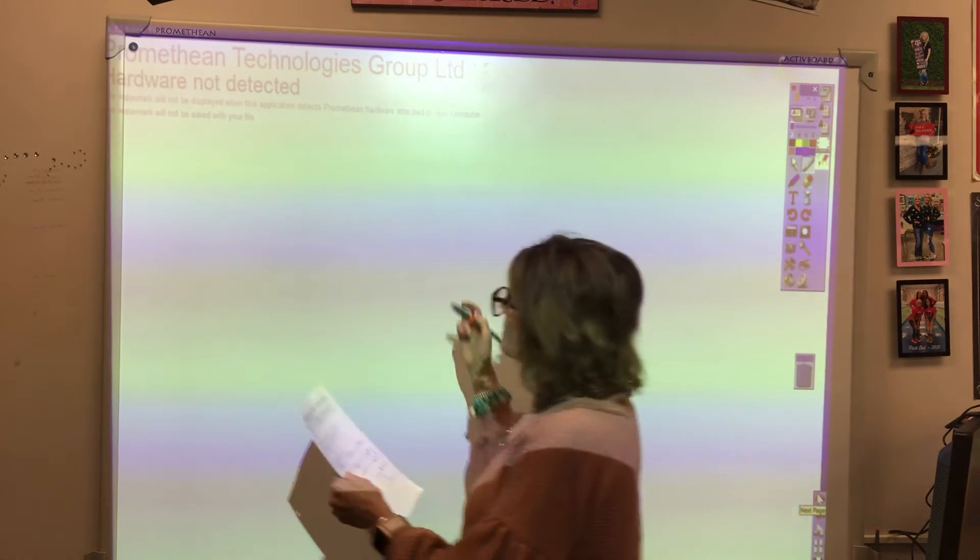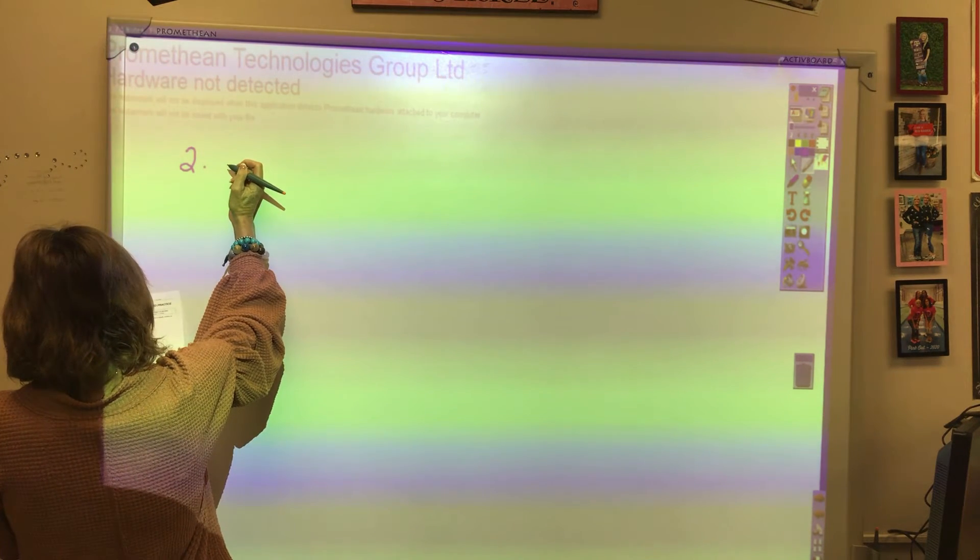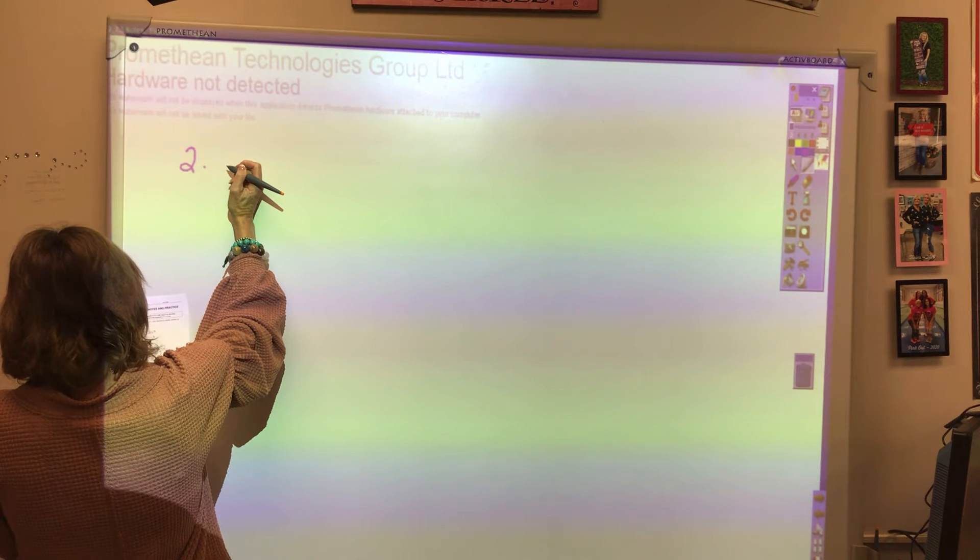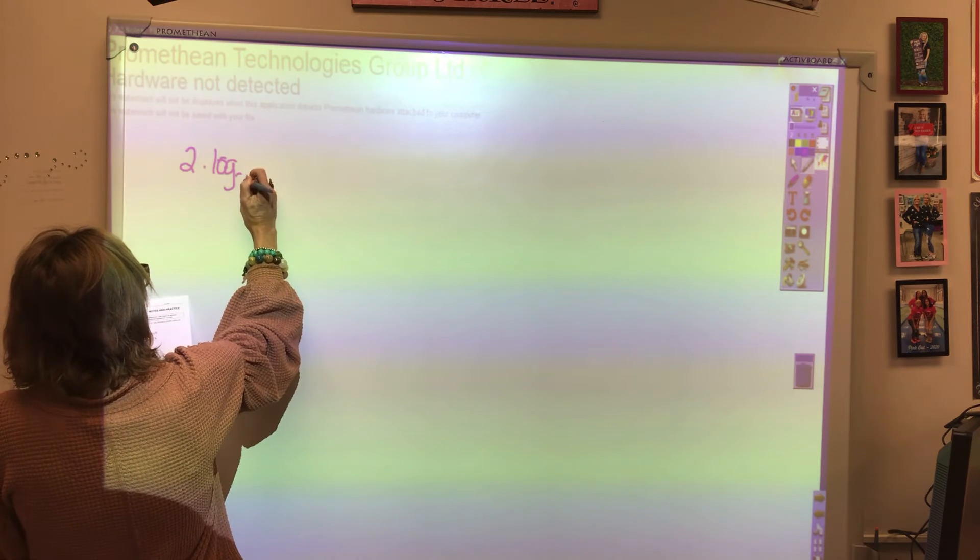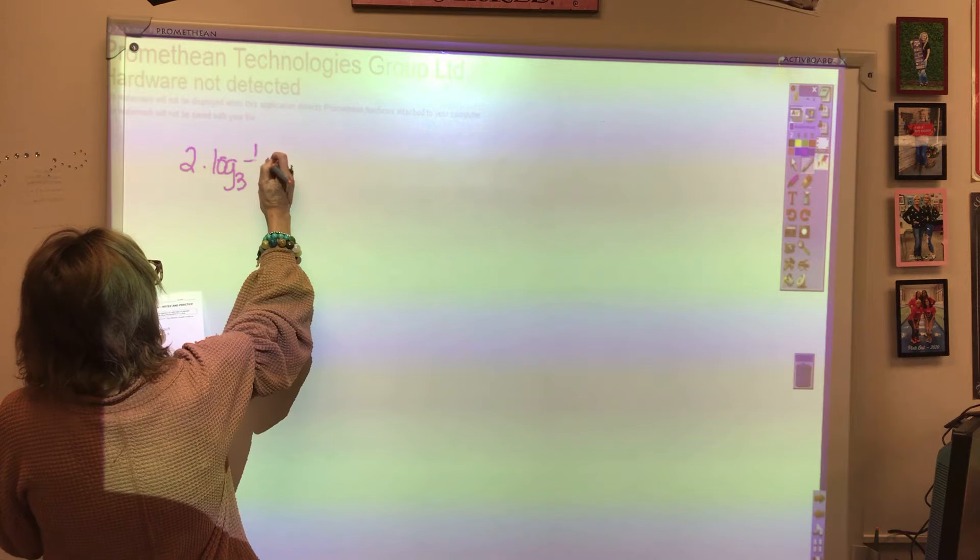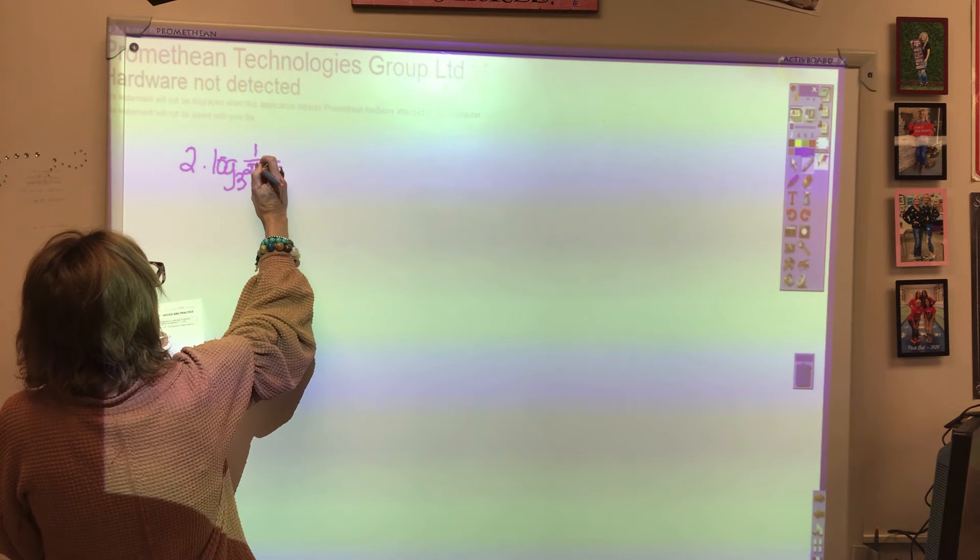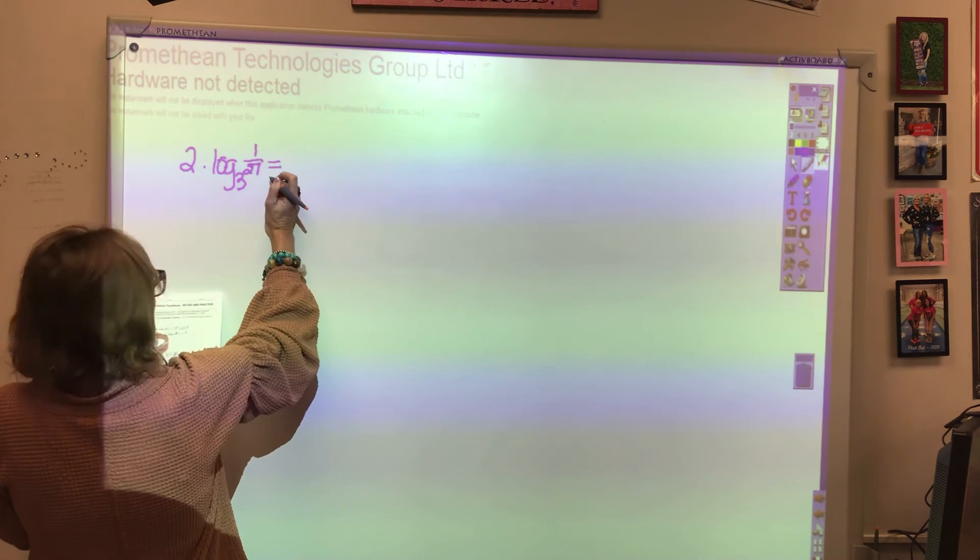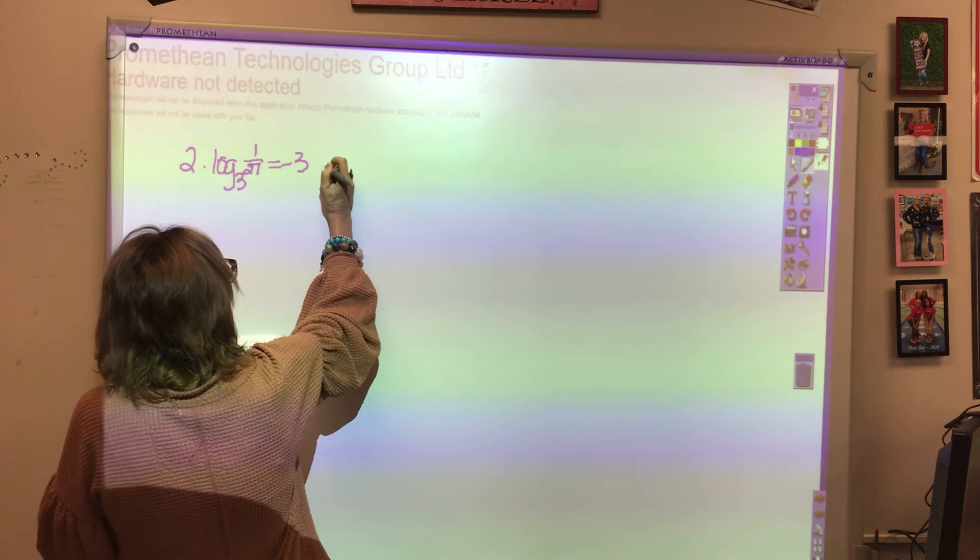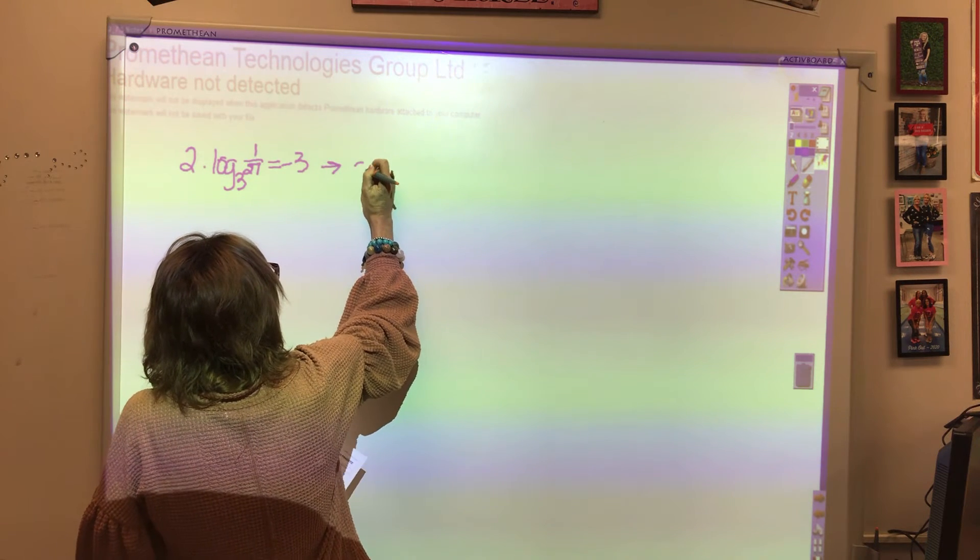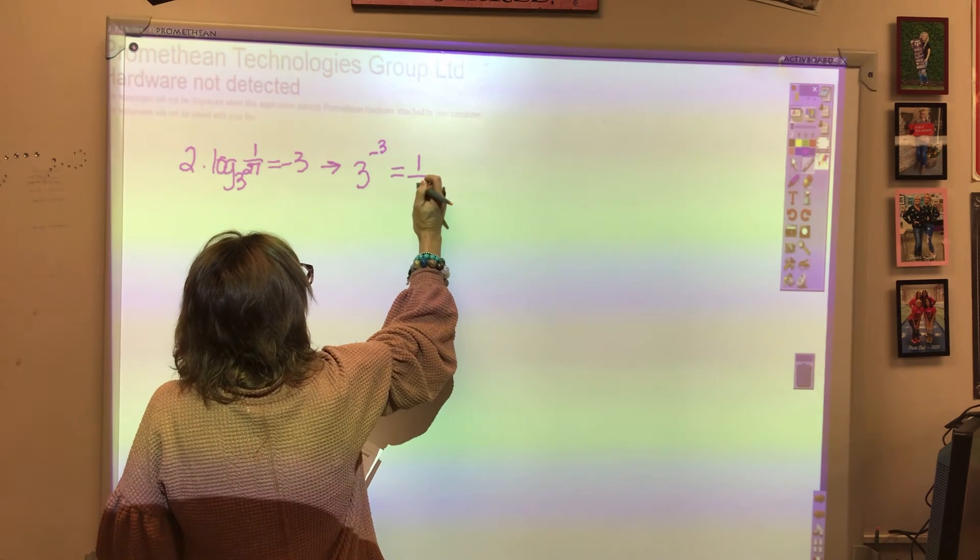So let's look at problem number two. And on number two, what we're going to do is we're going to write the logarithmic form into an exponent. So what we have is log base 3 of 1/27 equals negative 3. So to convert it to exponential form, that would be 3 raised to the negative 3 power equals 1 over 27.